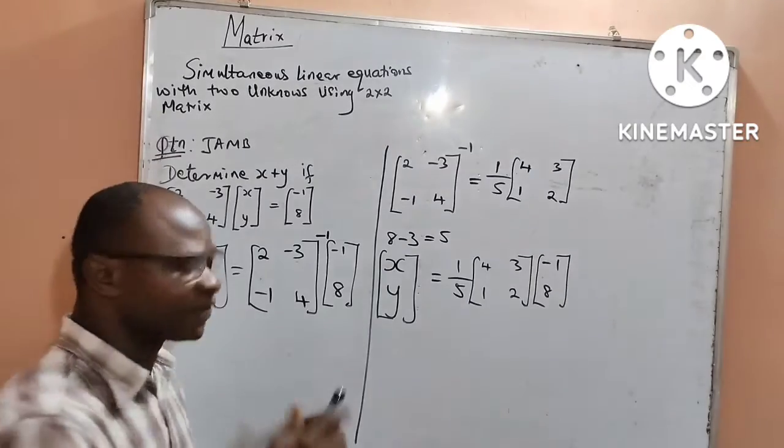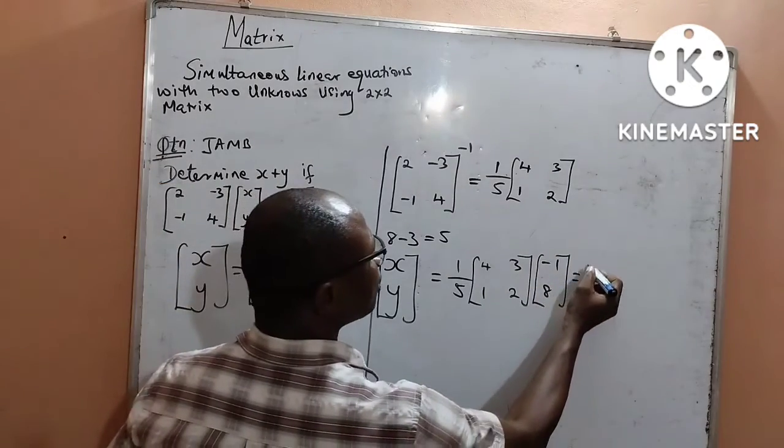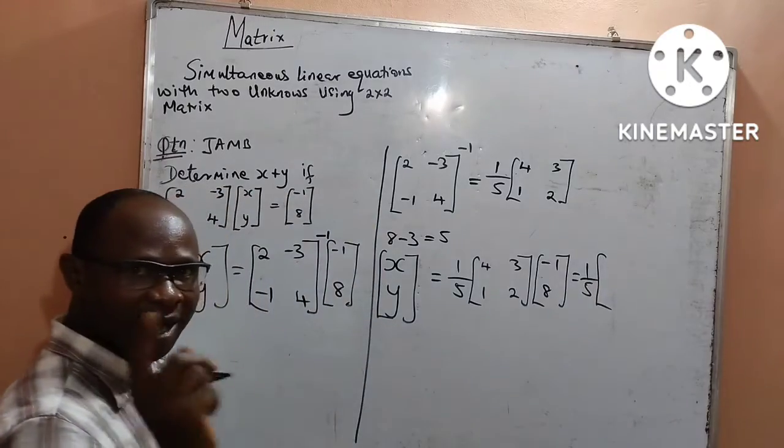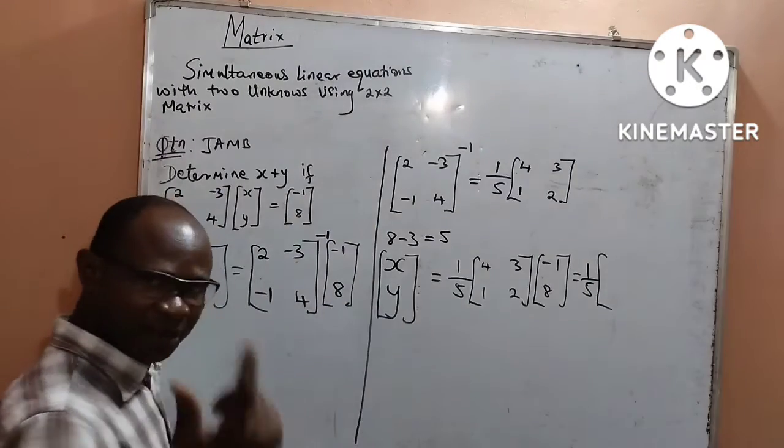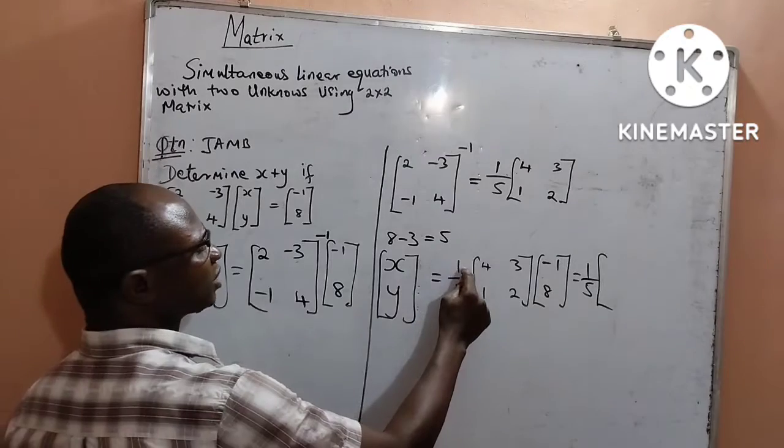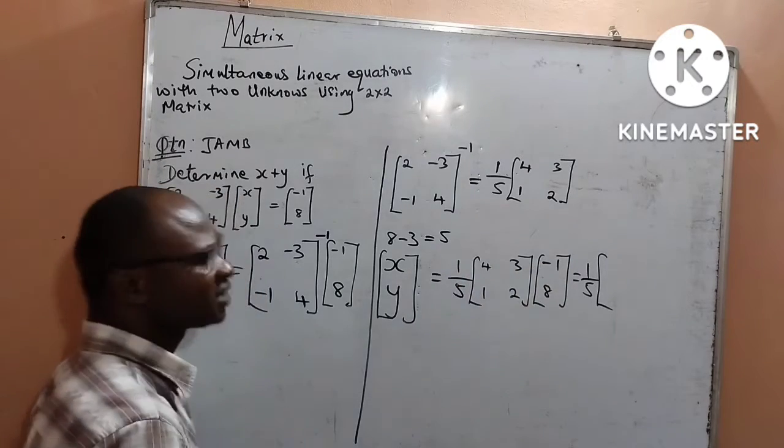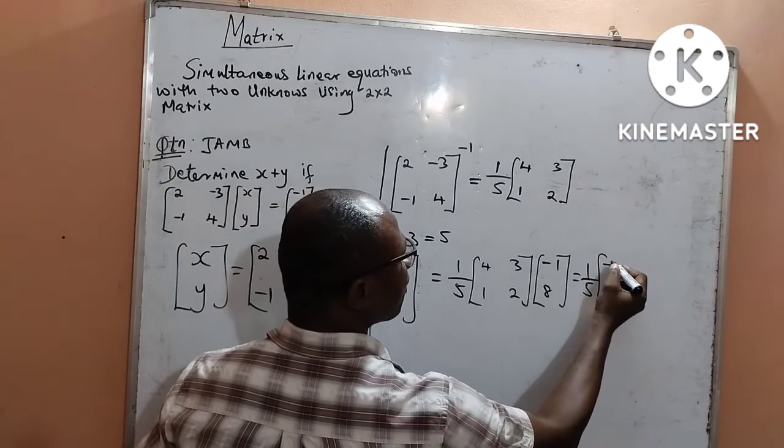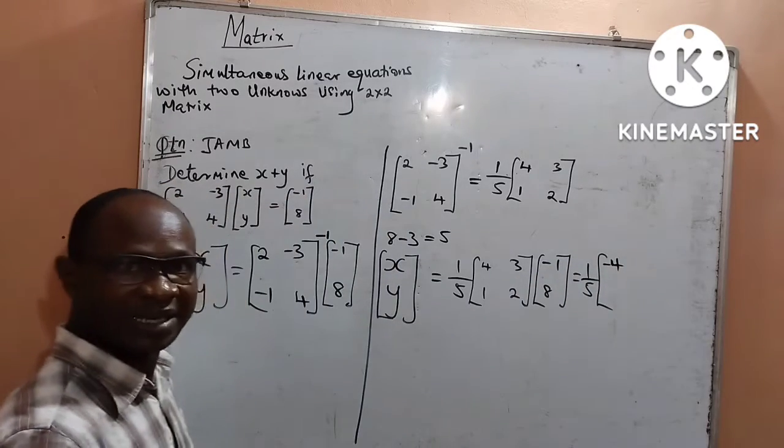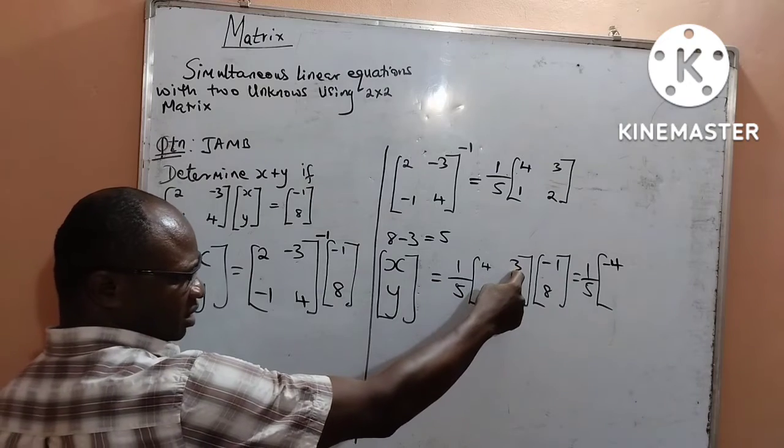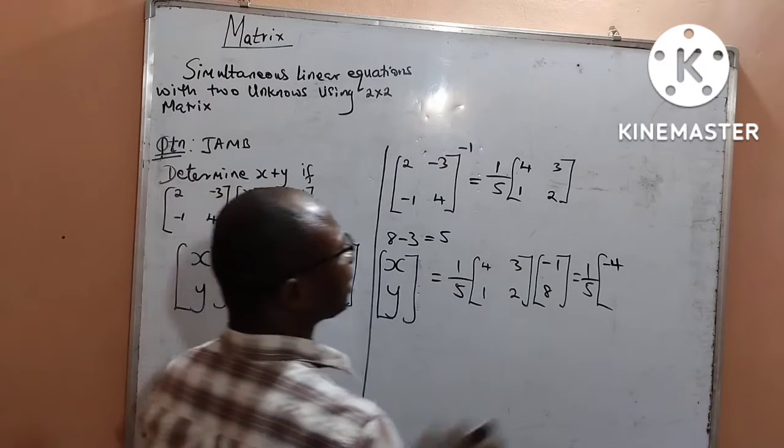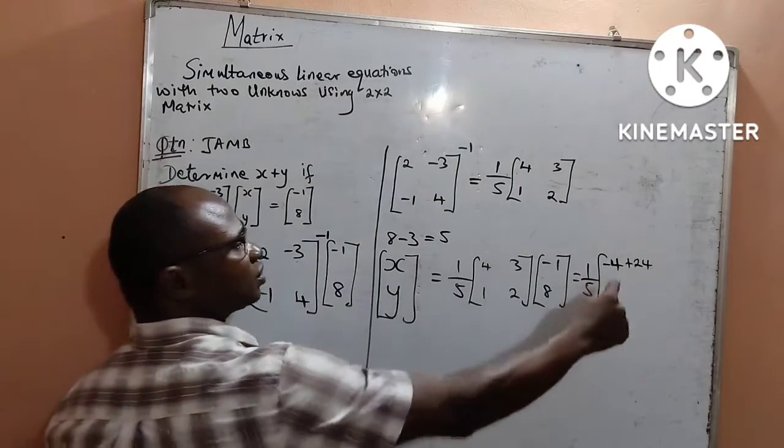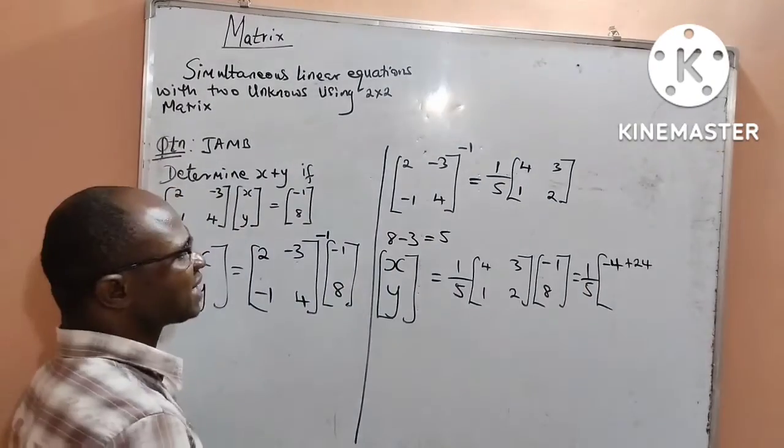This is now going to be 1 over 5. I will multiply the row by the column. That is 4 times minus 1 will give me minus 4. Next, 3 times 8 will give me plus 24. I have gotten the first row, the result.